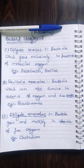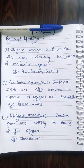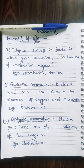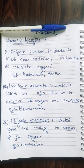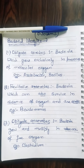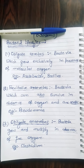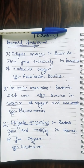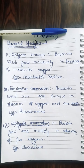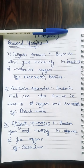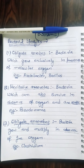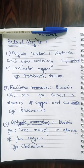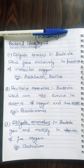In this video we will study about bacterial lifestyles. The first one is obligate aerobes — bacteria which grow exclusively in the presence of molecular oxygen. Examples include Azotobacter and Bacillus.